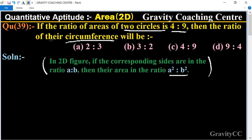So in this question, find the ratio of their circumference. The ratio of the circumference is equal to √4:√9, which equals 2:3. This is the required answer.